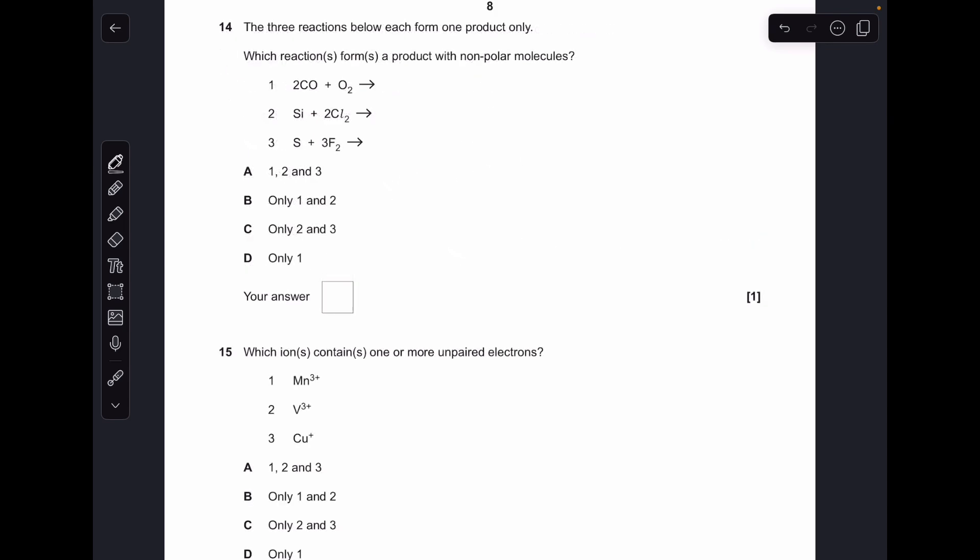Number 14. First we need to work out what the single products are for the three equations, then we can see which ones are nonpolar. 2CO + O₂ makes 2CO₂. Si + 2Cl₂ makes SiCl₄. S + 3F₂ gives SF₆. Nonpolar molecules: carbon dioxide, yes, that's nonpolar. Silicon tetrachloride, yes, also nonpolar. SF₆, also nonpolar. All three nonpolar. A is the answer.